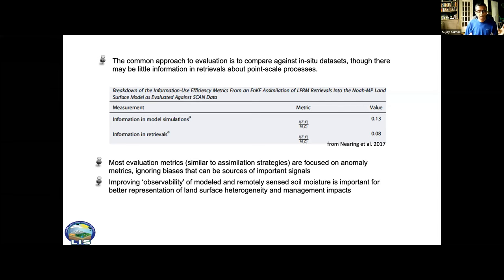Therefore it doesn't really make sense to go back and compare it to in-situ measurements to see if we are improving or getting worse. The evaluation metrics similar to the assimilation strategies are focused on anomaly metrics ignoring basically the elephant in the room which are the main source of important signals or the main sources of errors.